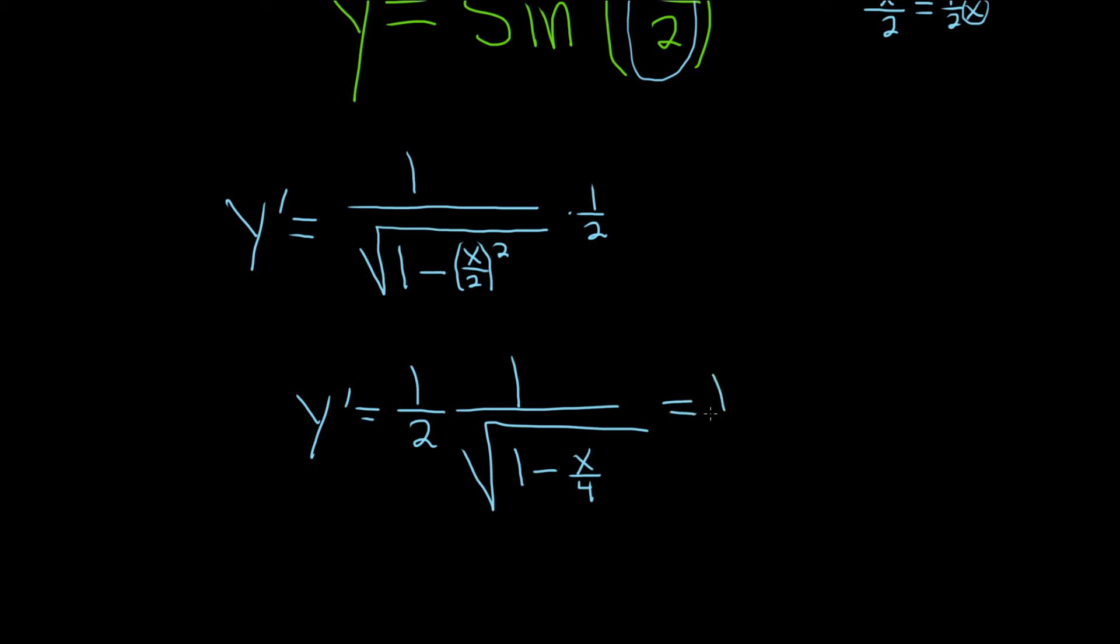This is equal to 1 half times 1 over—what you can do now with the 1 is you can think of it as 4 over 4, so we really have 4 minus x squared over 4.